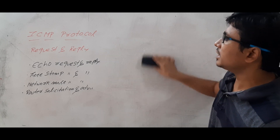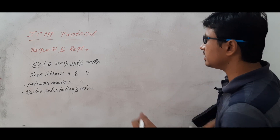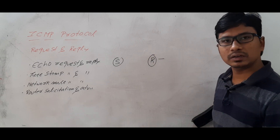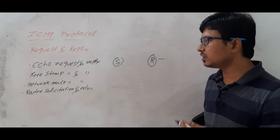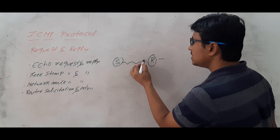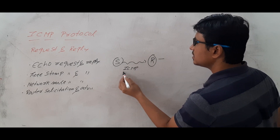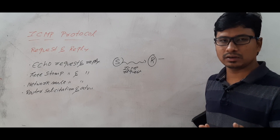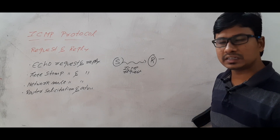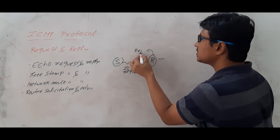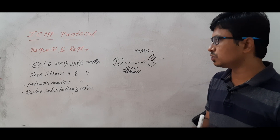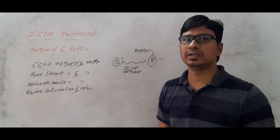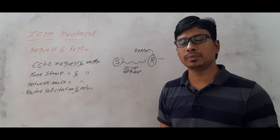The next use is network mask request and reply. Since only your default router or gateway has the subnet mask of the entire network, the source sends an ICMP request packet asking the router to provide the subnet mask, so the source can communicate within the network and with the internet as well. The router replies with the subnet mask or network mask. So ICMP request and reply packets are used in echo request and reply, timestamp request and reply, router solicitation and advertisement, and network mask request and reply.